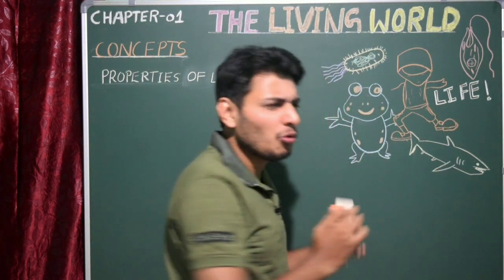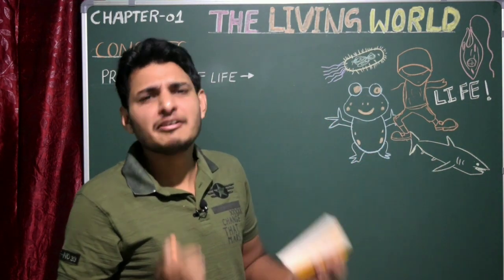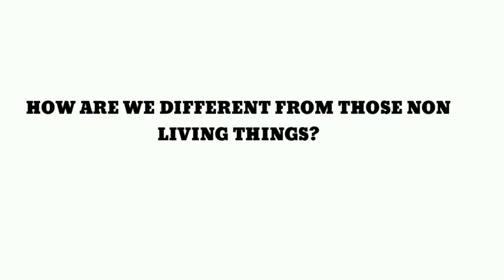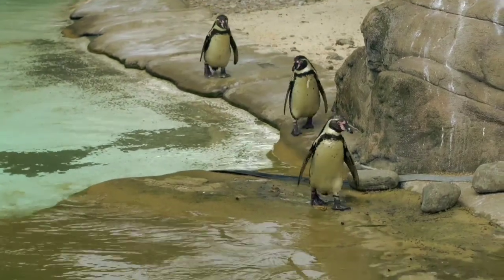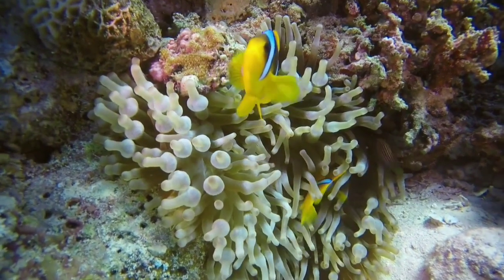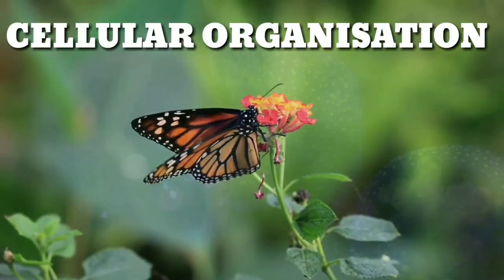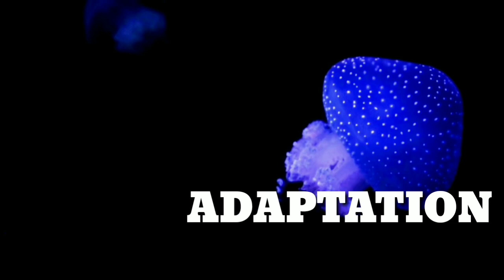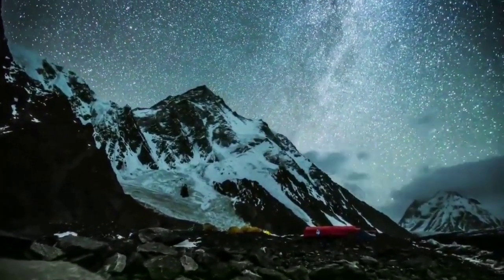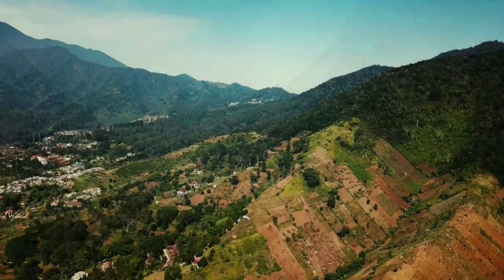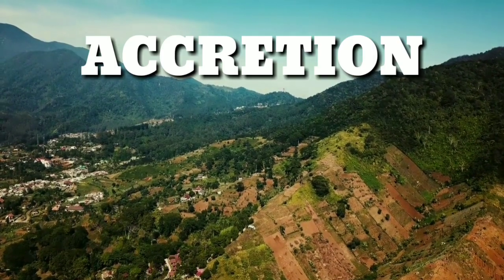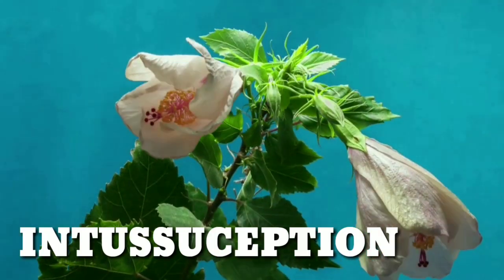How do you differentiate between a living and a non-living thing? All living organisms share common characters like growth, reproduction, metabolism, cellular organization, consciousness, adaptation, and locomotion, whereas non-living things don't exhibit any of these features — except growth. Growth in non-living things is by accumulating materials on the surface, whereas in living things growth is from inside.